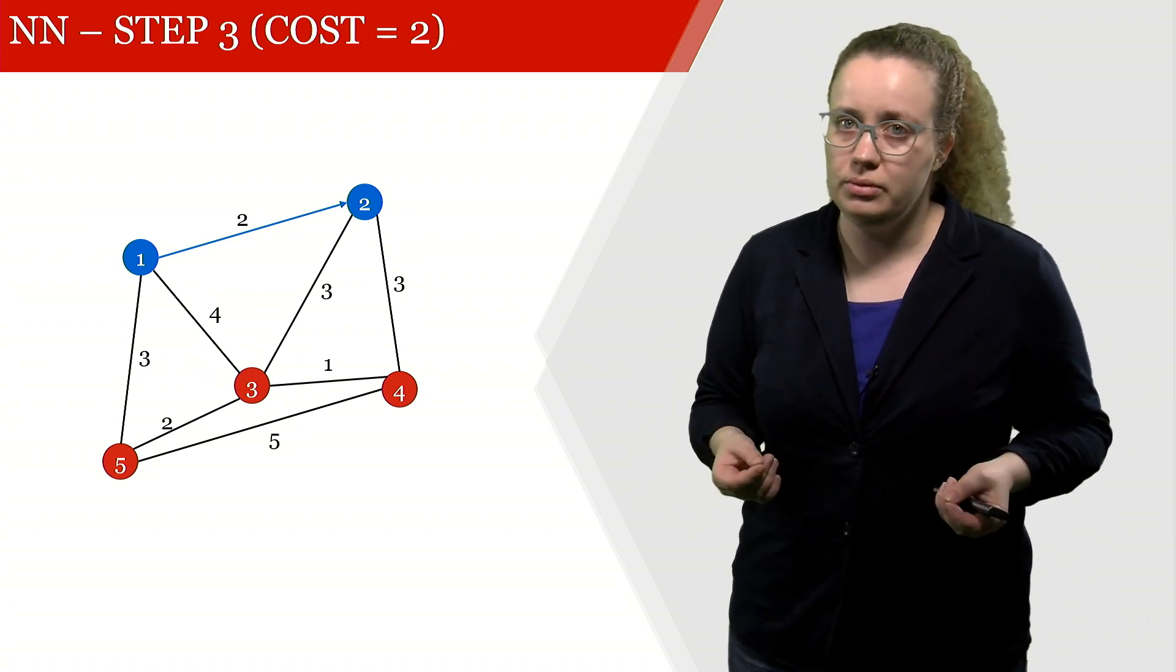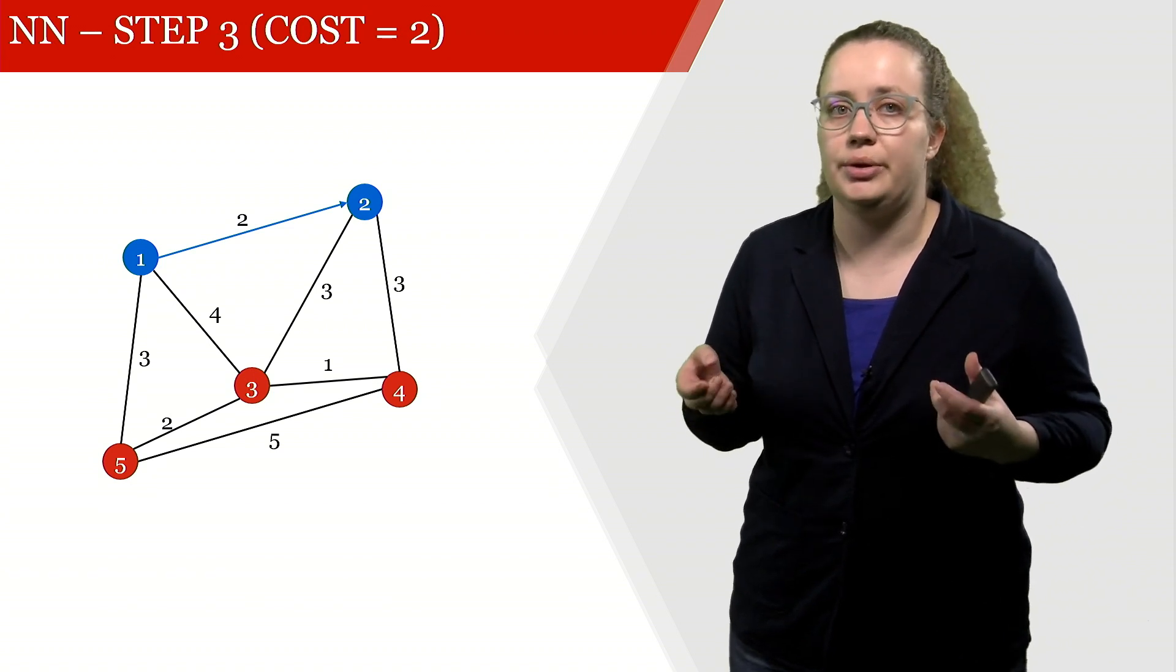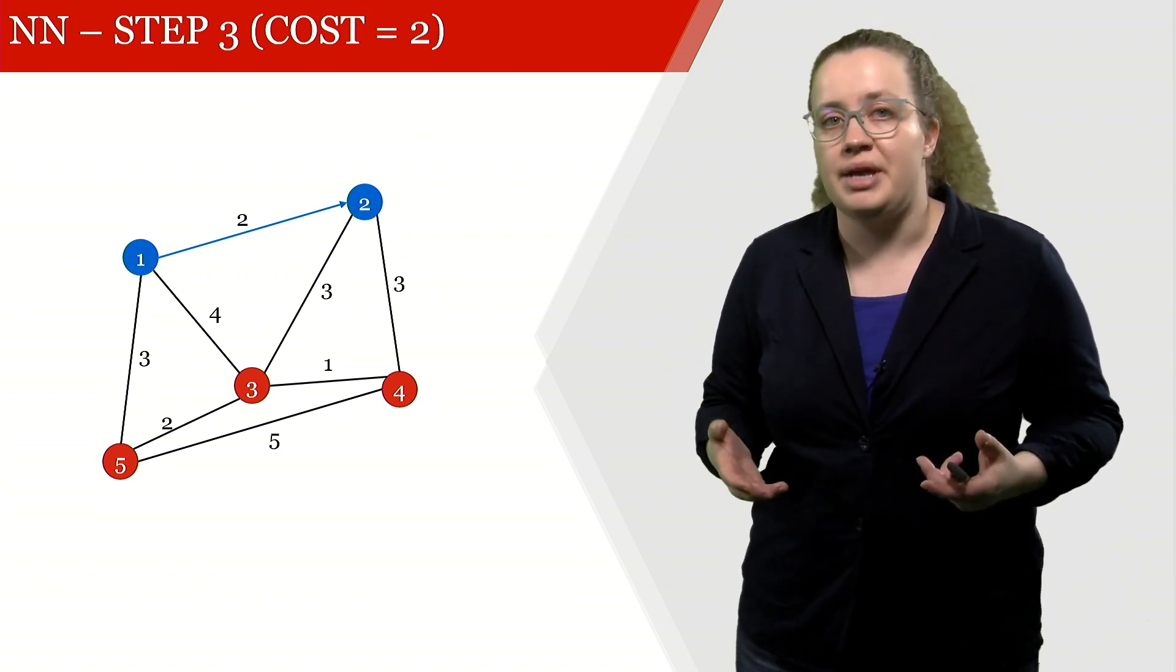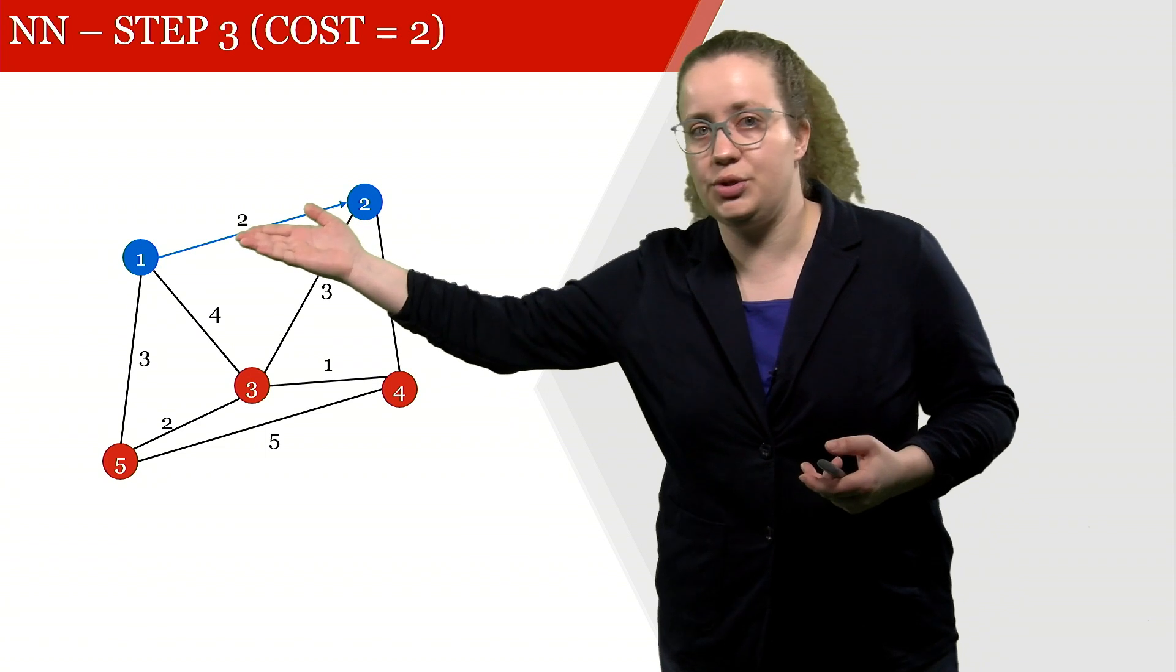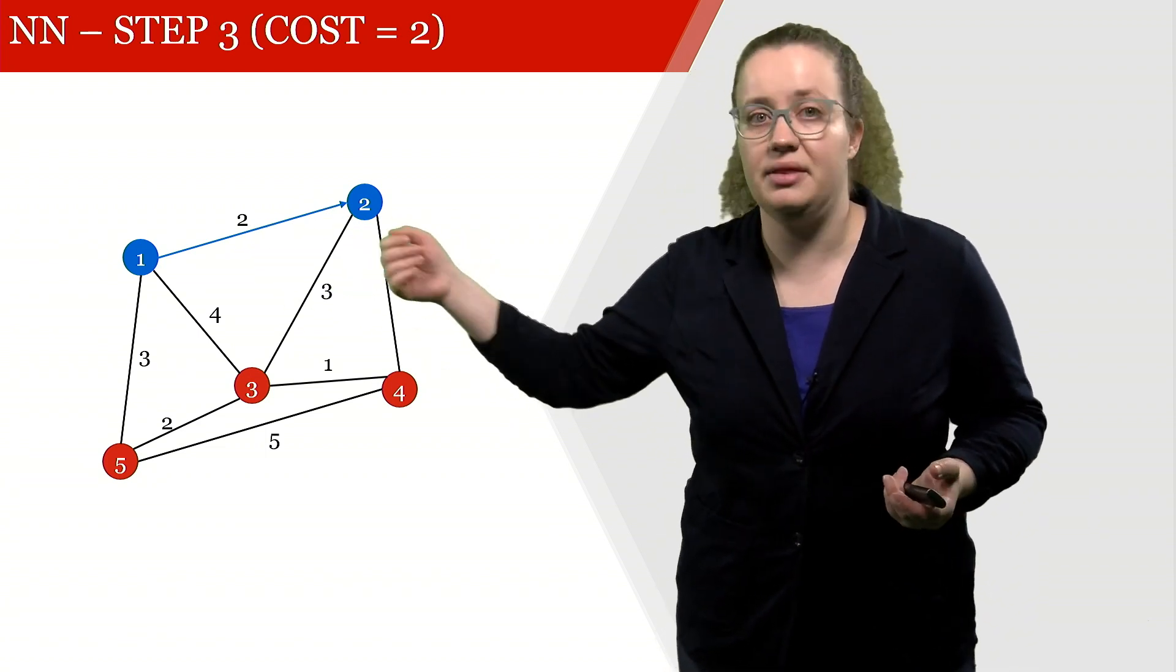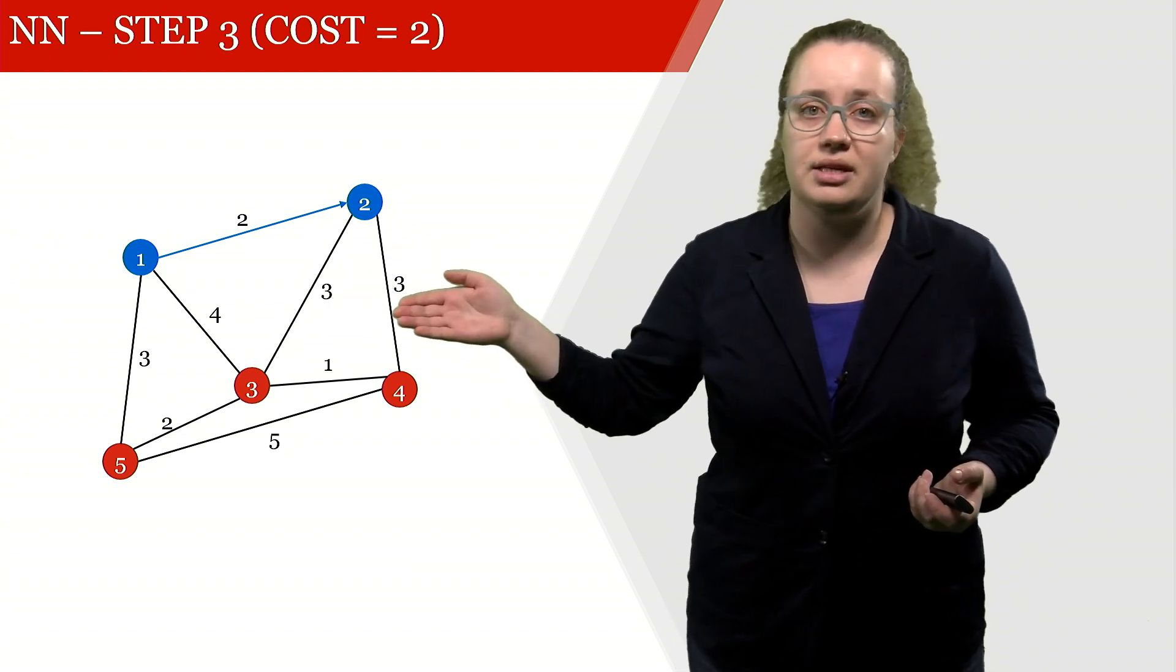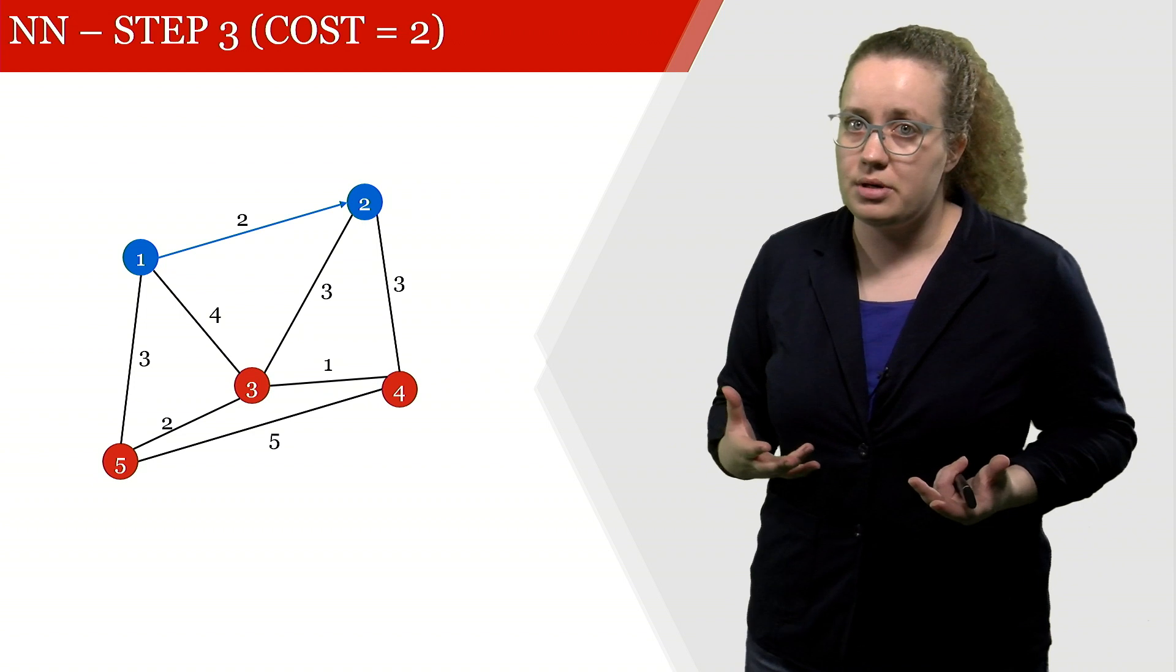Now we are at node 2 and we continue from here because we haven't visited all nodes just yet. We cannot return back to node 1 even though that would be the cheapest option because we've already been there. So we select either this arc or this arc, and both of them come with a cost of 3.